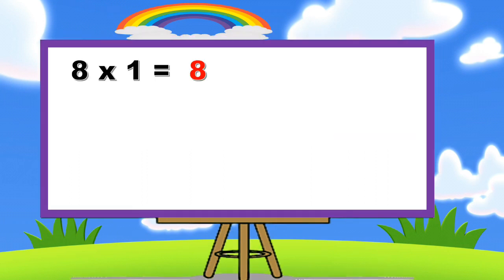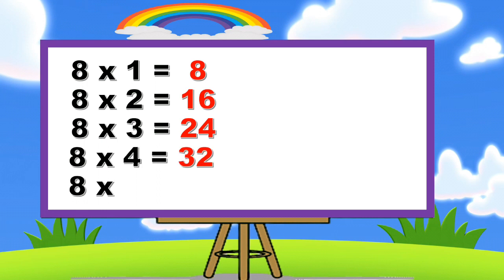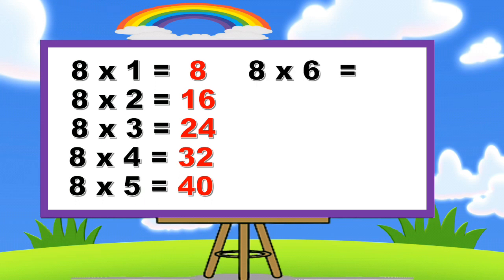Eight ones are eight. Eight twos are sixteen. Eight twos are sixteen. Eight threes are twenty-four. Eight threes are twenty-four. Eight fours are thirty-two. Eight fours are thirty-two. Eight fives are forty.